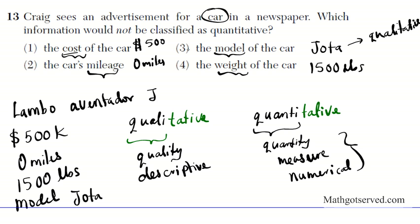So mileage, costs, and weights are quantitative. Model is not. This is qualitative. So the answer is option 3.